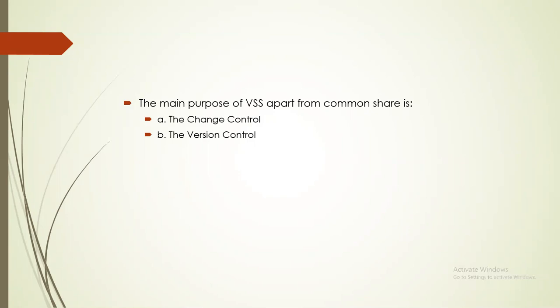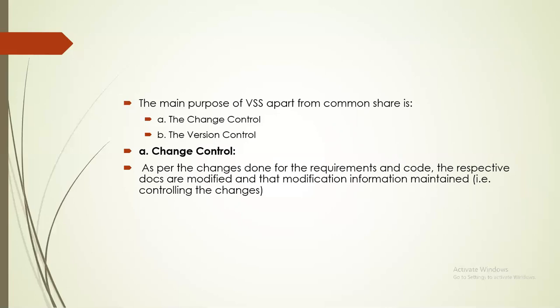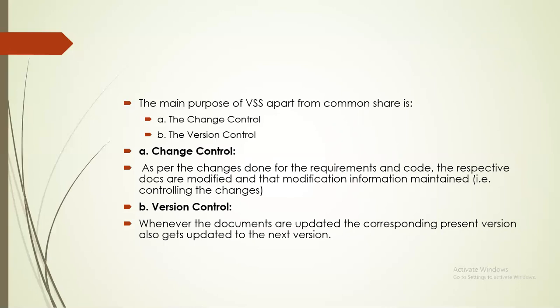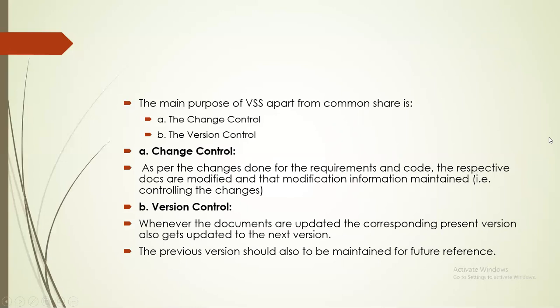In simple terms: change control means that on any project-related document, if any changes are made, that information is maintained. Version control means whenever any document is updated, the present version gets updated to the next version, and the previous version is also maintained for future reference. As per changes done to requirements and code, the respective documents are modified and that modification information is maintained — that is change control.